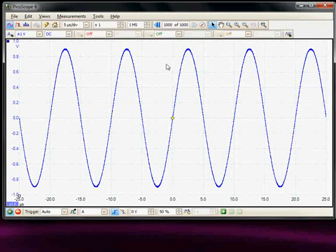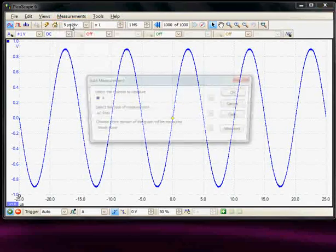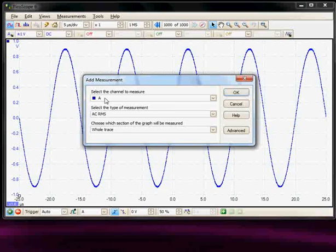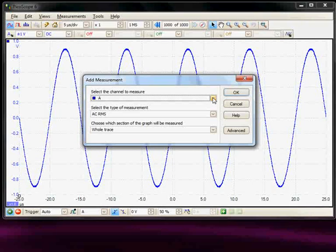But similarly we could do the same measurement automatically, so we can select the measurements menu and add a measurement, and the source has to be selected. In this case we only have channel A available, but it could be from channel A, B, C and D.